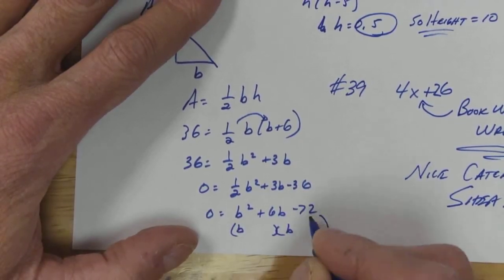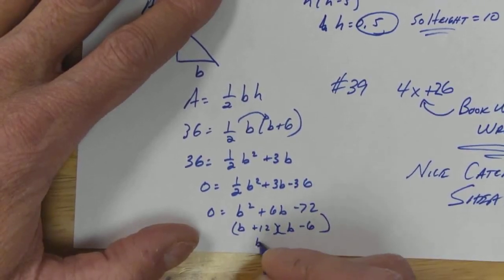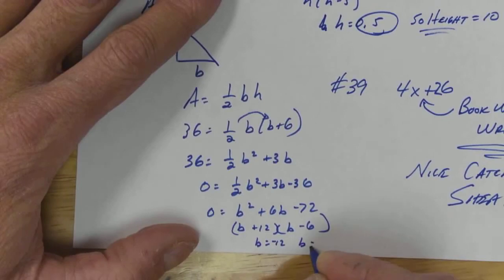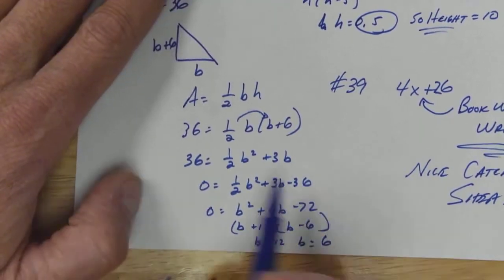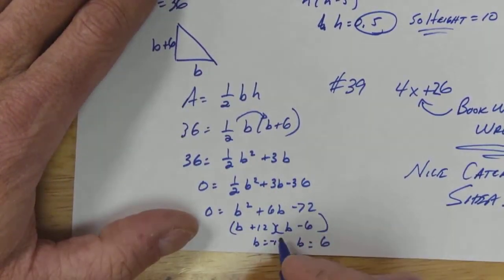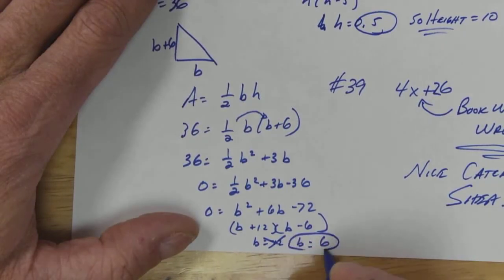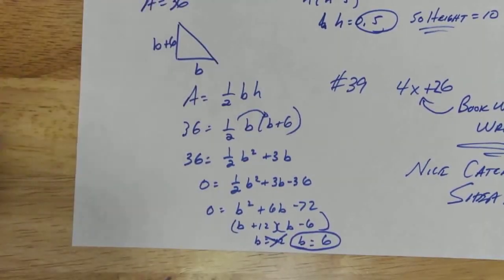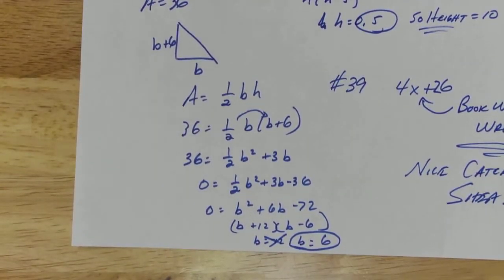So now I can go ahead and factor: b, b. And the factors of 72 that I'm looking for are plus 12, minus 6. So b is either equal to negative 12 or b is equal to 6. And b can't be negative since it's a length, so b is 6. I don't remember what they're asking on that problem, but if they're asking for the height, well, you've got the height now 12. b is 6.